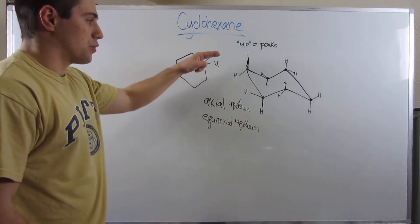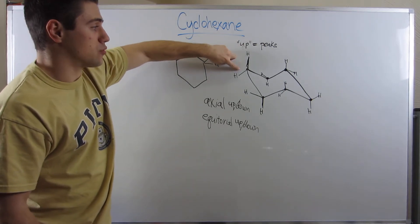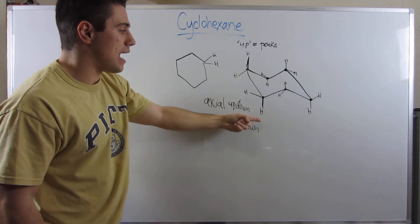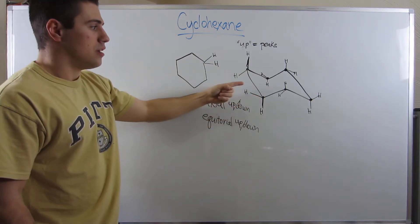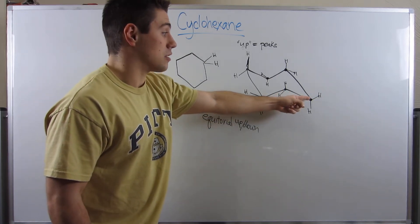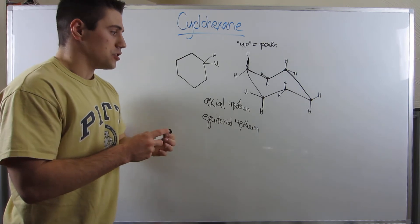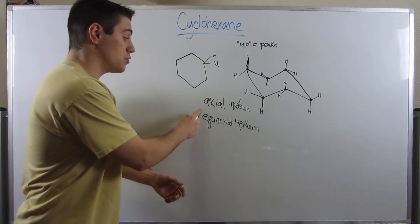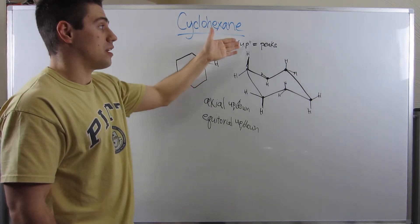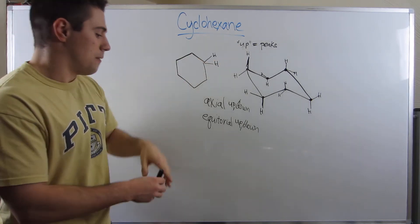Going through the ring again with these terms: at a peak I have axial up and equatorial down; at a valley I have axial down and equatorial up. You just need to know these two terms because no one really uses 'straight up, slightly down' — they would say axial up, equatorial down.